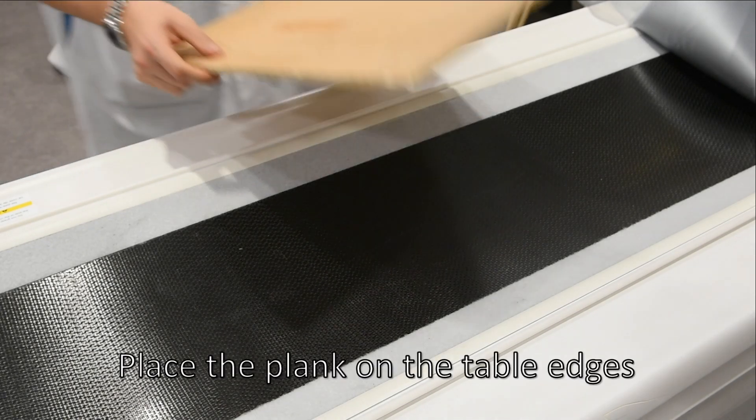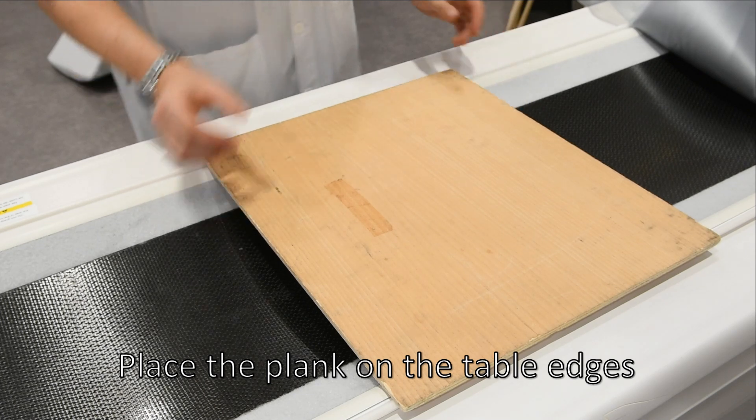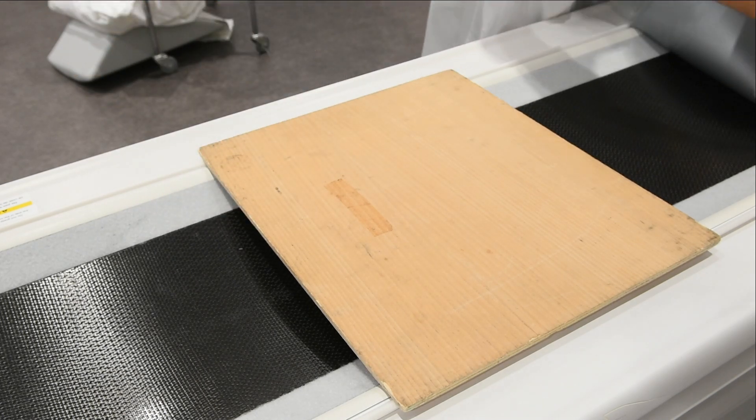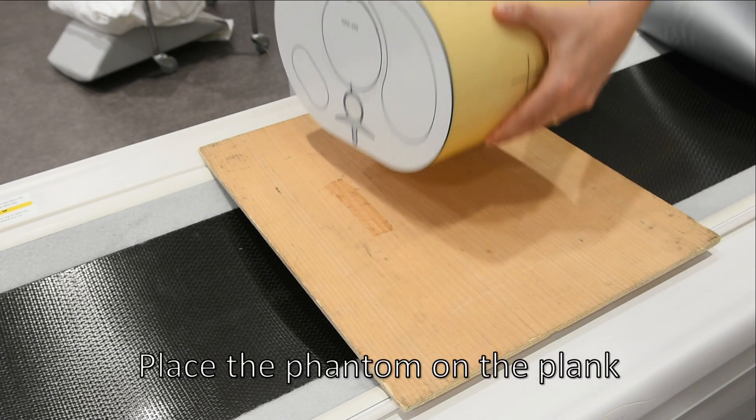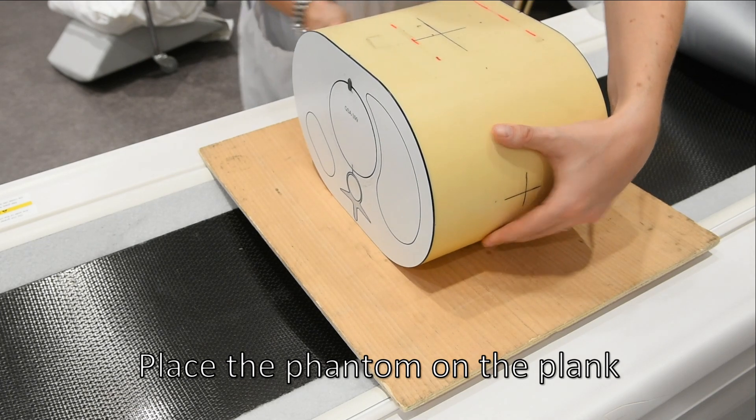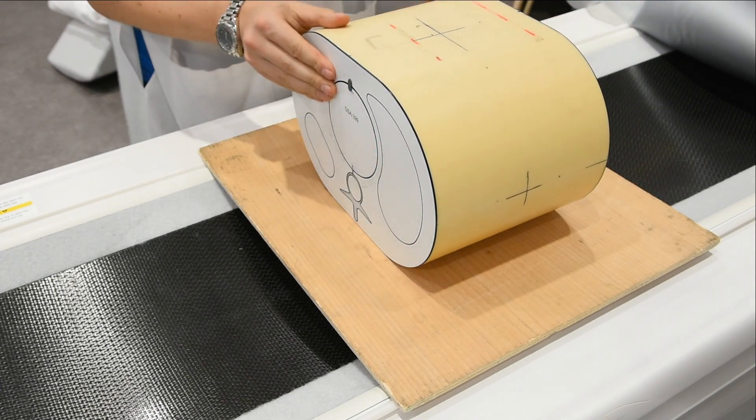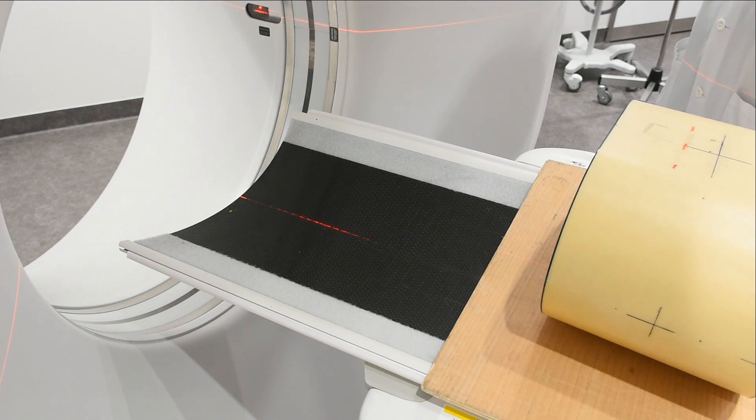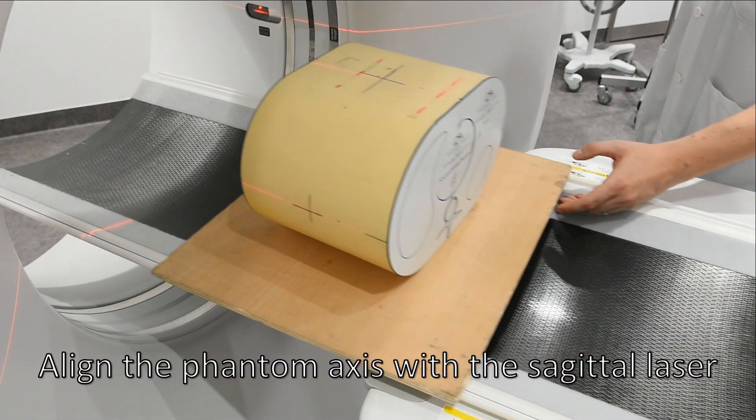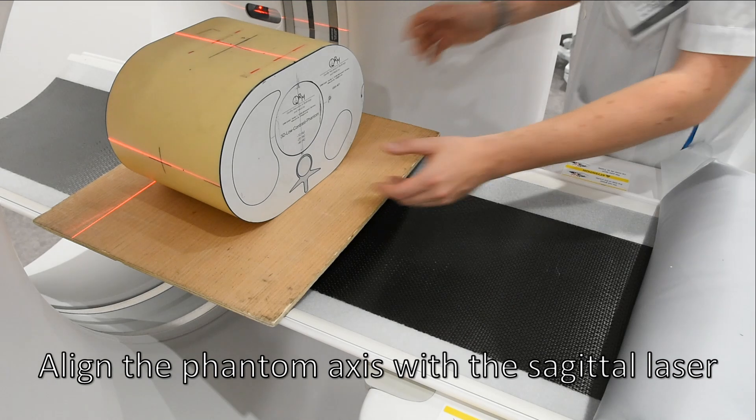Place the plank on the table edges. Place the phantom on the plank. Align the phantom axis with the sagittal laser.